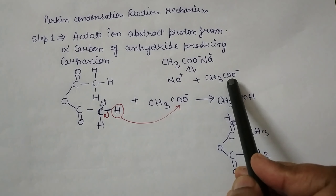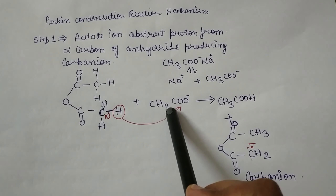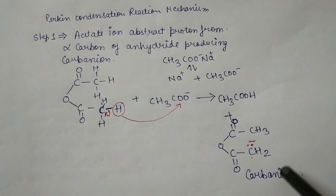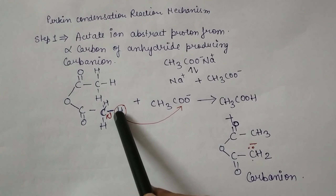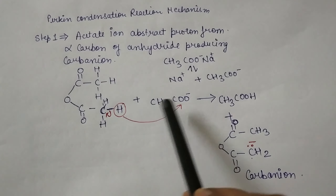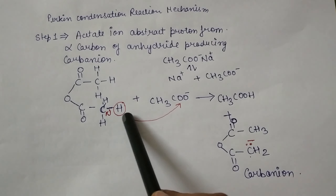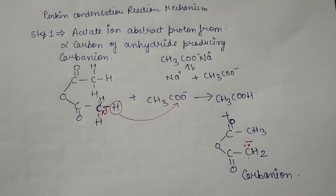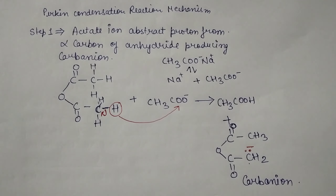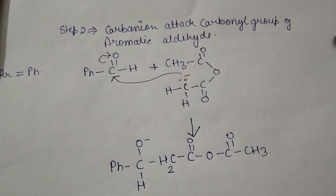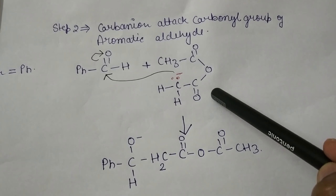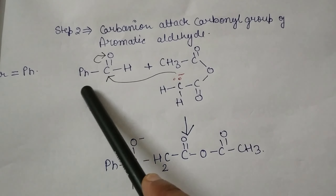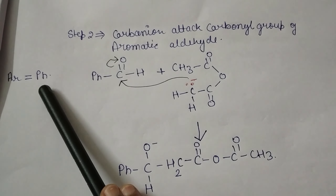Let's start with the mechanism. In the first step, the acetate ion abstracts a proton from the alpha carbon of the anhydride, producing a carbanion. The sodium salt of acetic acid splits into Na⁺ and CH₃COO⁻ (acetate ion). This acetate ion takes a proton from the acid anhydride and converts into acetic acid. The proton is taken from the CH₃ group; the bond between carbon and hydrogen breaks, the proton is liberated, and the carbon acquires a negative charge — it is converted into a carbanion.